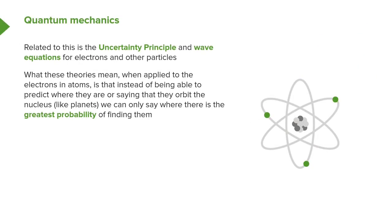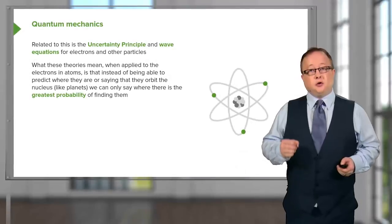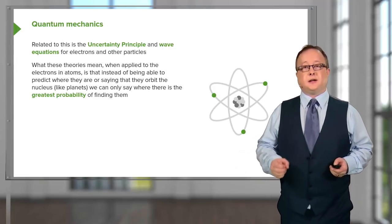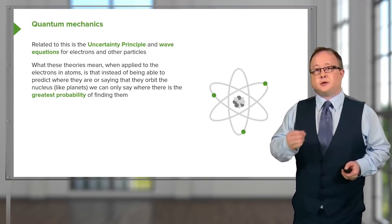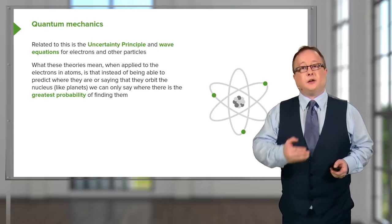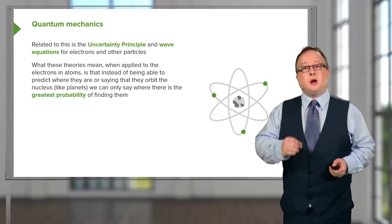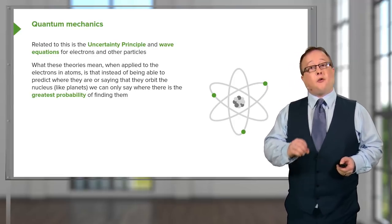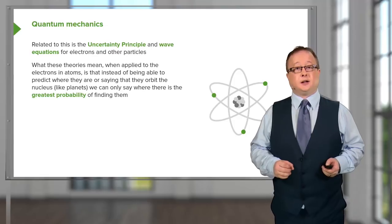This relates to the uncertainty principle and wave equations for electrons and other particles. When looking at an electron, you can't talk about it being in a discrete part of a shell — all you can do is determine where is the greatest probability of being able to find it. This may seem irrelevant to covalent and ionic bonding, but it's very important because it relates to the existence, shape, and energy of orbitals.